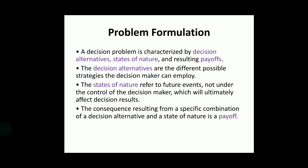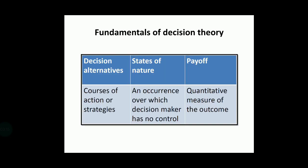The second component is states of nature — future events not under the control of the decision maker which will ultimately affect the decision results. These could be sudden activities or events that cause the entire plan to go wrong. The third component is payoff — the outcome that results from the combination of decision alternatives and states of nature. To summarize: decision alternatives are courses of action or strategies; states of nature are occurrences over which the decision maker has no control; and payoff is the quantitative measure of the outcome.